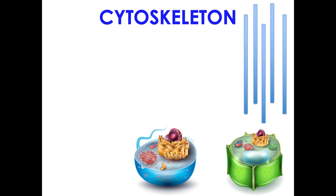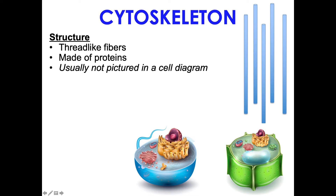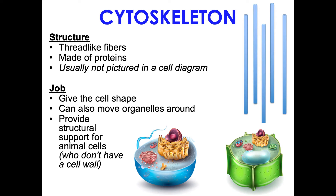The cytoskeleton consists of thread-like fibers made of proteins. They're often not even pictured in cell diagrams. They give the cell shape and help move organelles around. For animal cells especially, they provide structural support since animal cells don't have cell walls — just like your skeleton gives you shape and structure, the cytoskeleton does the same for the cell.